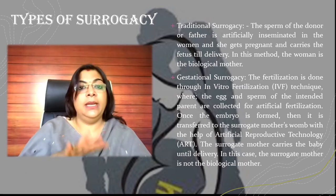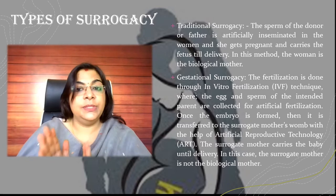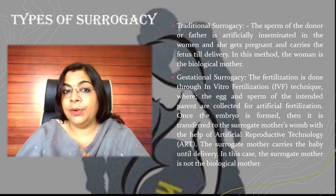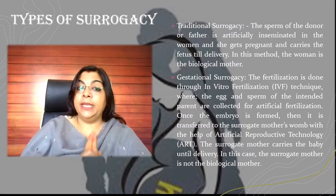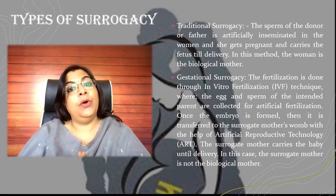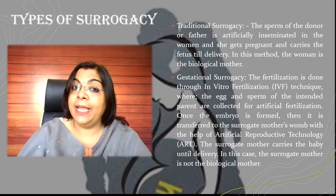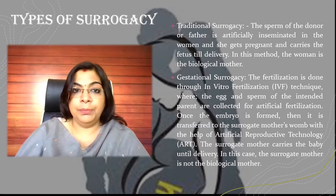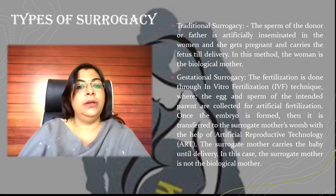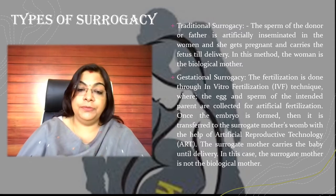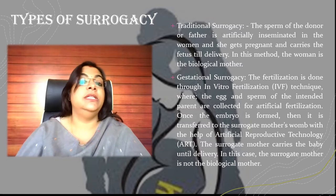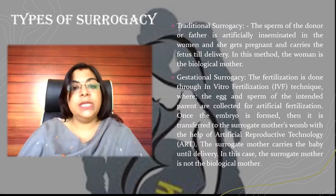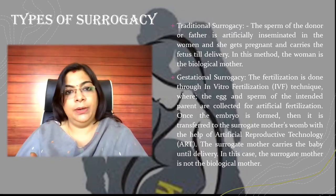In IVF technique, only the womb is essentially rented. The surrogate mother is not the biological mother of that child because the sperm and egg both belong to the intended couple. Once the embryo is formed it is transferred to the surrogate mother — that is the key difference between traditional surrogacy and gestational surrogacy, which is popularly known as IVF and is mostly used worldwide today.